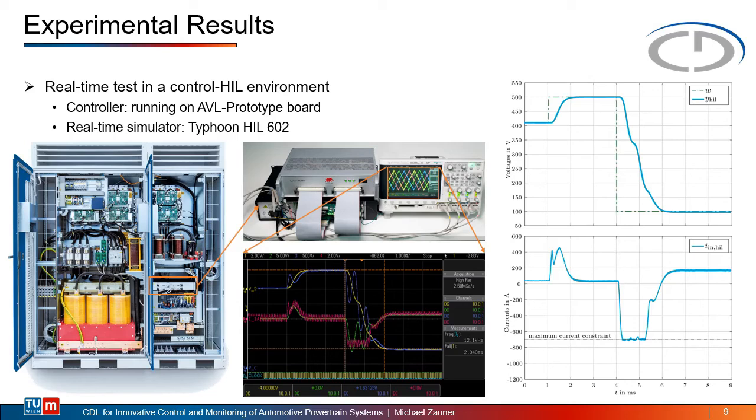On the far right you can see the results of such a real-time test. The upper plot shows the voltage of our system. We start with a reference of about 400 volts and shortly after we perform a step up to 500 volts. We are able to follow this step in less than one millisecond showcasing the highly dynamic output that we wanted.